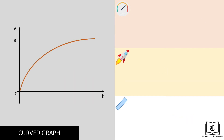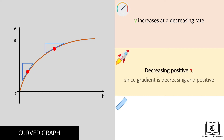Next up, in this graph, we can see the velocity is also increasing here, but at a decreasing rate. How do we tell? Let's look at the gradient. The gradient is positive, but it's becoming gentler, meaning gradient is decreasing. Hence, acceleration is positive but decreasing. Displacement is also positive, since the area under the graph here is positive.